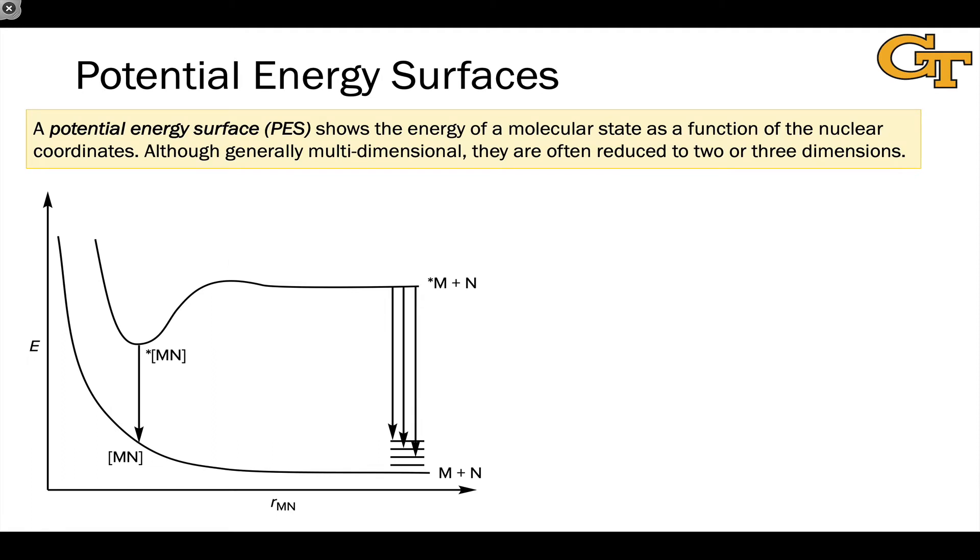So what is a potential energy surface? It shows the energy of a molecular state as a function of the nuclear coordinates. And most commonly, the nuclear coordinates are vastly reduced in dimensionality.